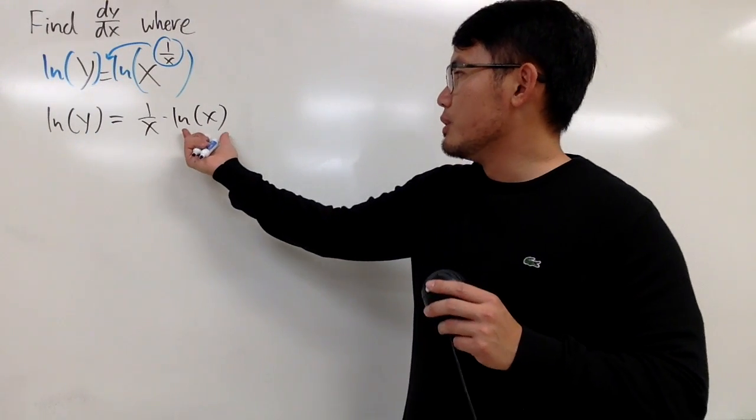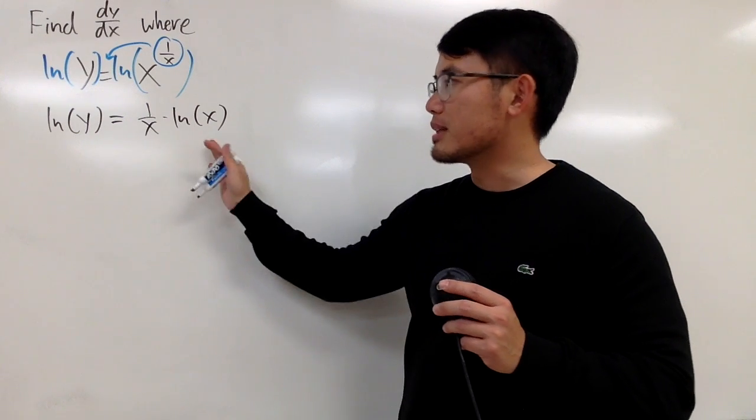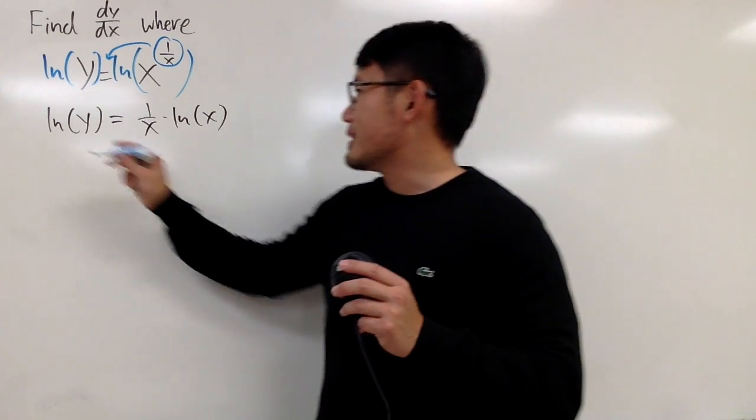You might want to put ln of x on top. In that case, you'll have to do the quotient rule, but if you keep it as is, you can just do the product rule.